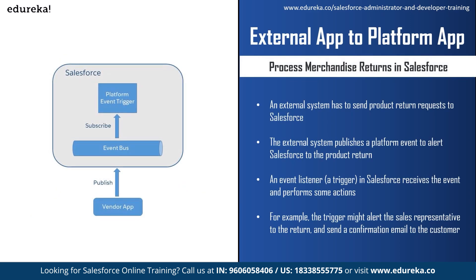In the second scenario, an external product application notifies Salesforce of a product return. If someone wants to return a purchased product, an external system sends product return requests to Salesforce for processing. The external system publishes a platform event to alert Salesforce for the return. Then an event listener — a trigger in Salesforce — receives the event and performs some action. For example, the trigger might alert the sales representative for the return and send a confirmation email to the customer.